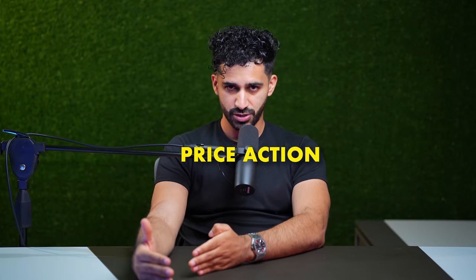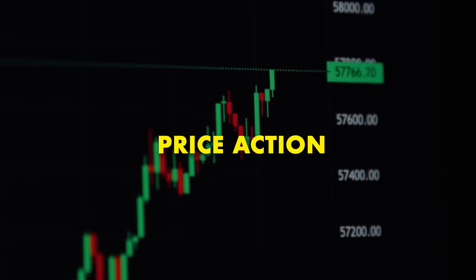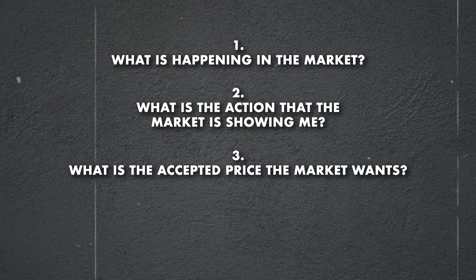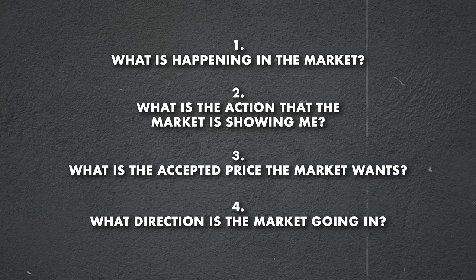That's the basic understanding of how volume is one of the most important things, right next to price action. There's a lot more to volume, a lot more to understanding order flow, and a lot more to understanding the auction market theory. But before we dive into that, let's go into the second part: understanding price action. To me, price action has always been king. I like to look at what price is telling me, what is happening in the market, what action the market is showcasing, what the accepted price is, and what direction the market is going. I combine that with volume.